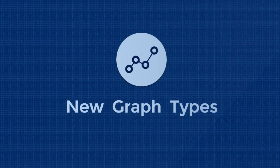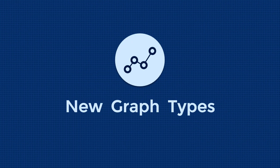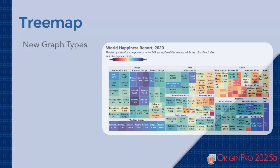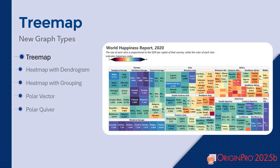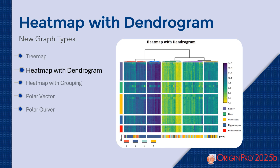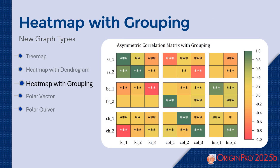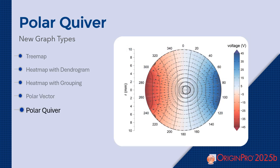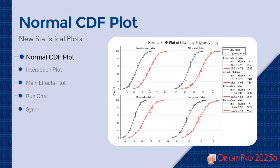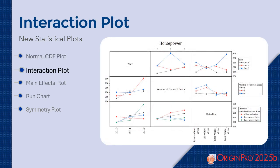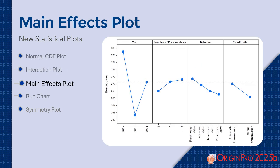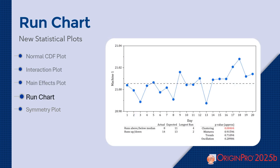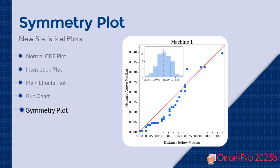Here are the new graph types available in Origin 2025b. The new graphical plots are Treemap, Heatmap with Dendrogram, Heatmap with Grouping, Polar Vector, and Polar Quiver. The new statistical plots are Normal CDF Plot, Interaction Plot, Main Effects Plot, Run Chart, and Symmetry Plot.